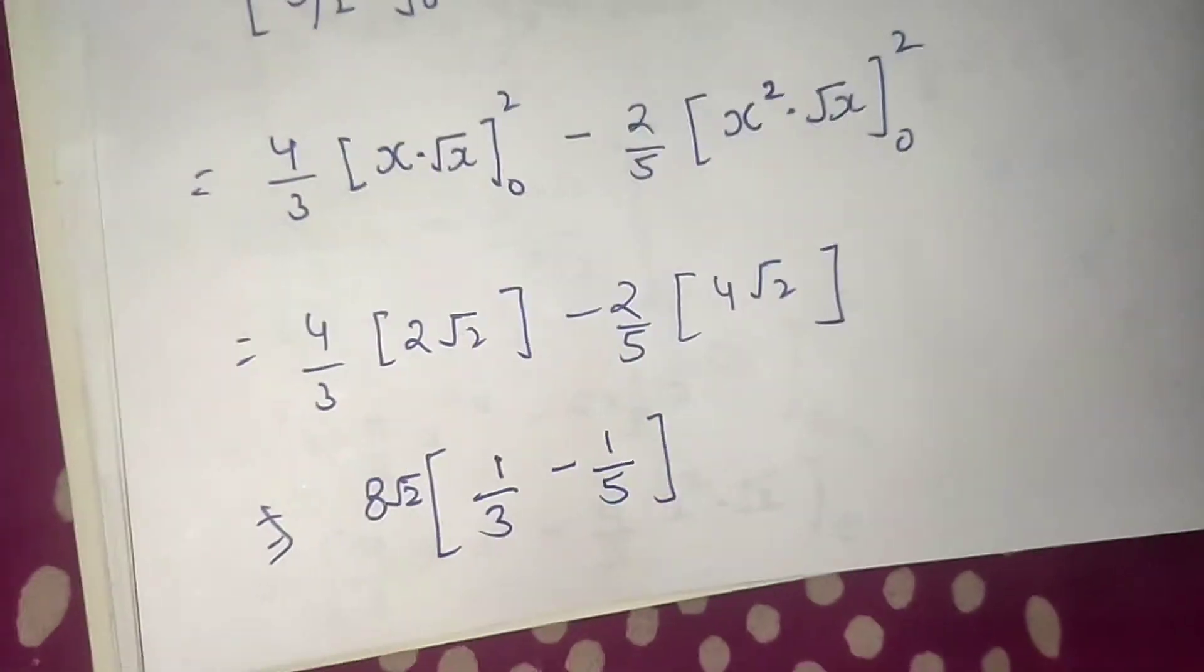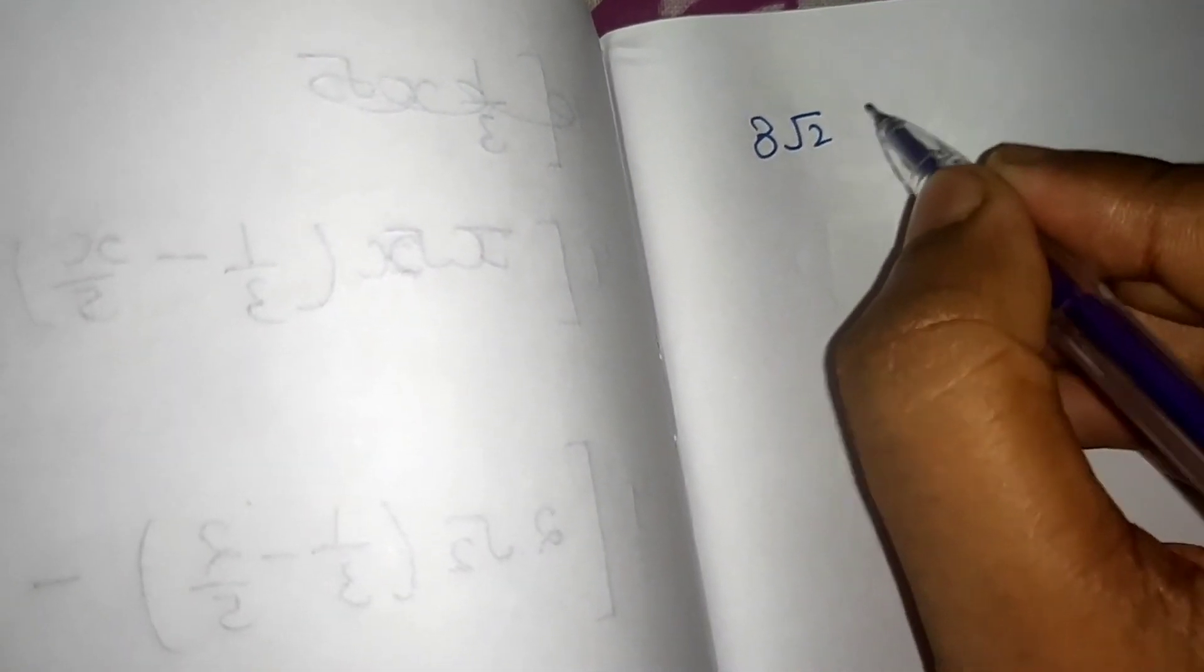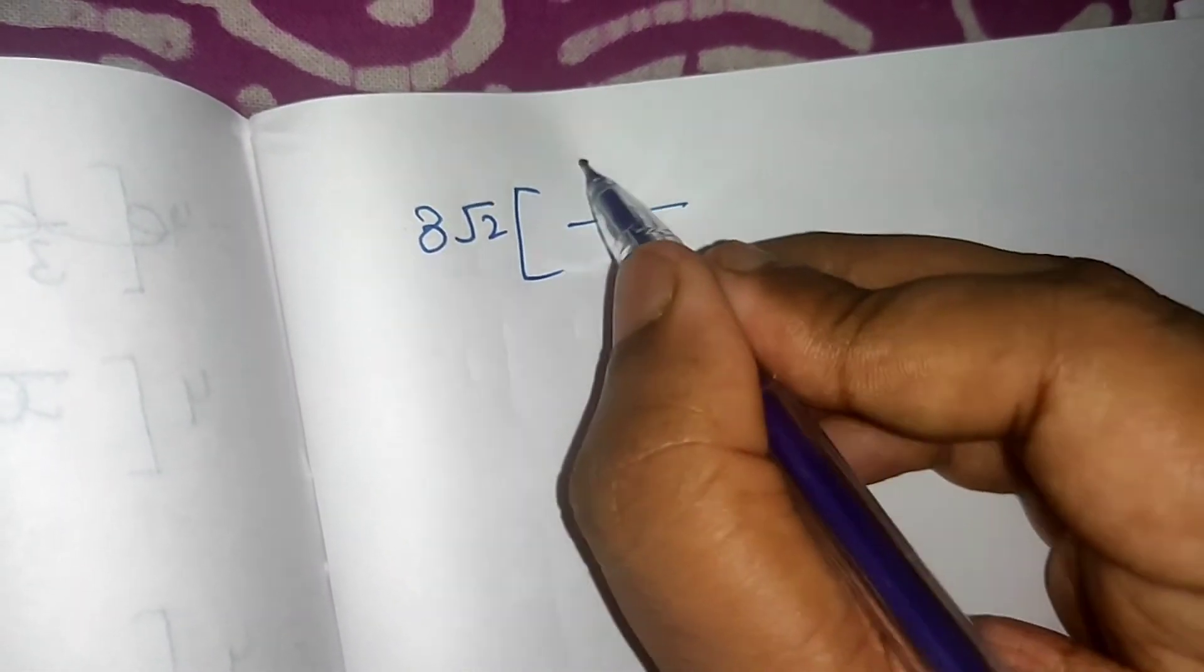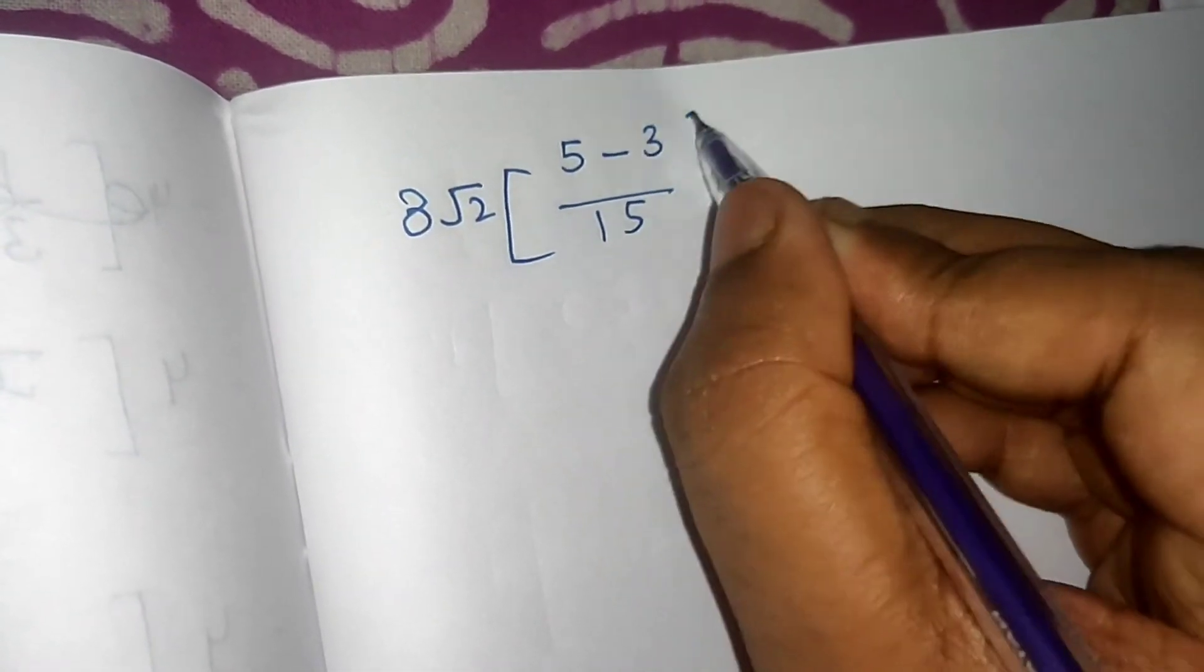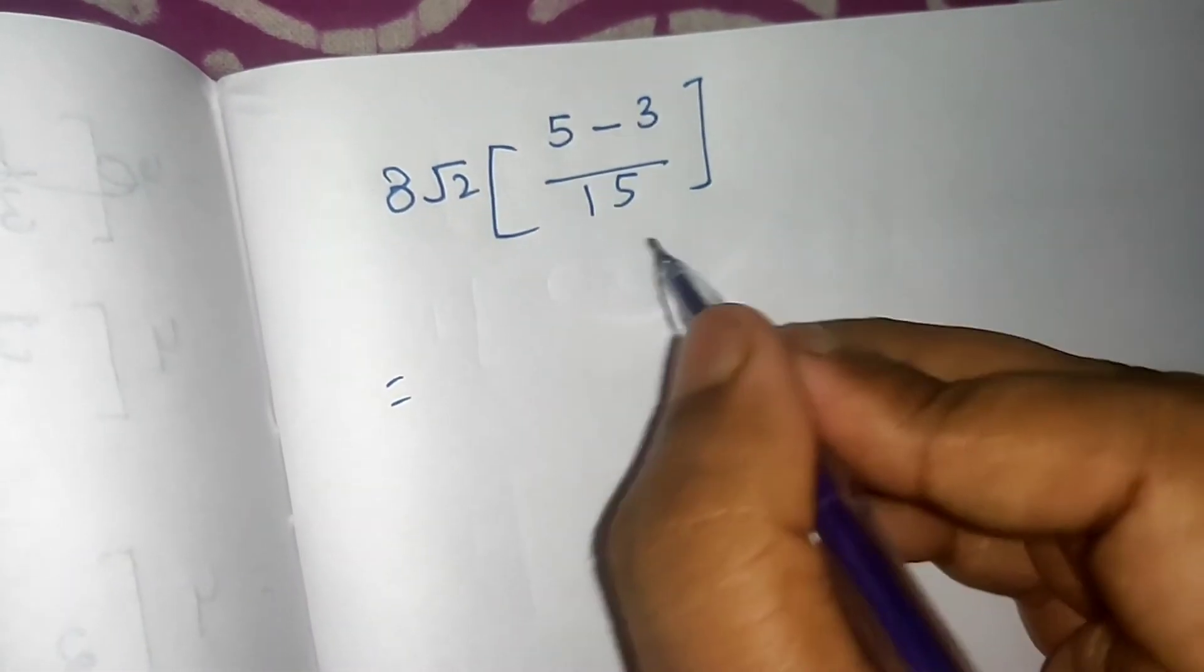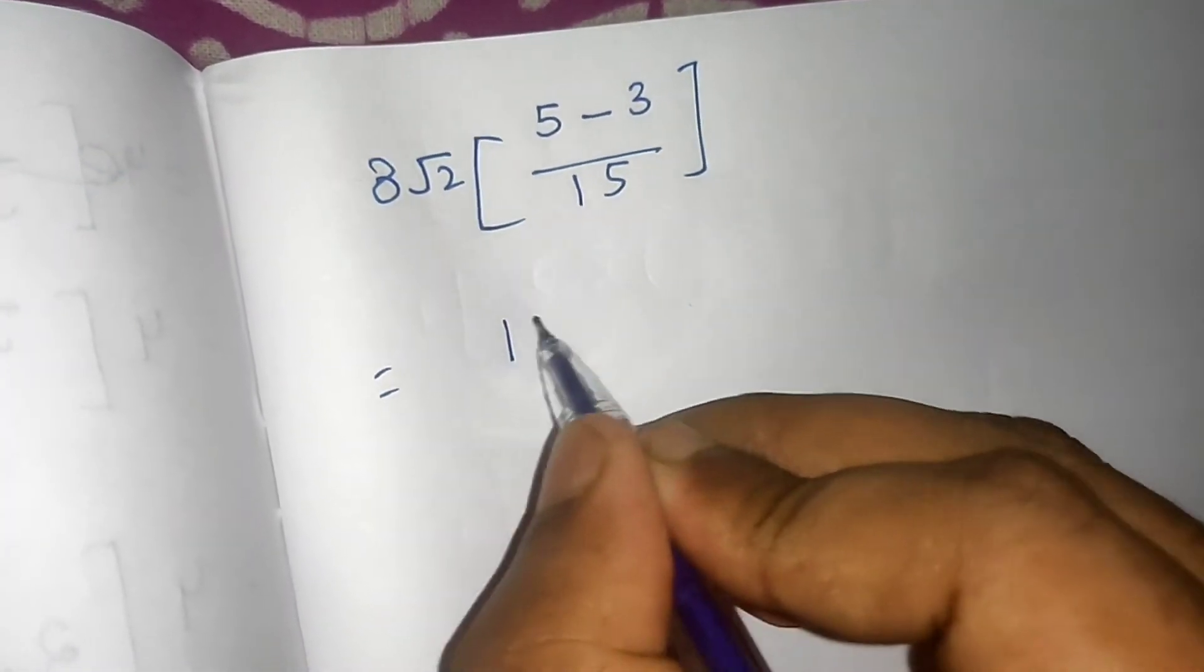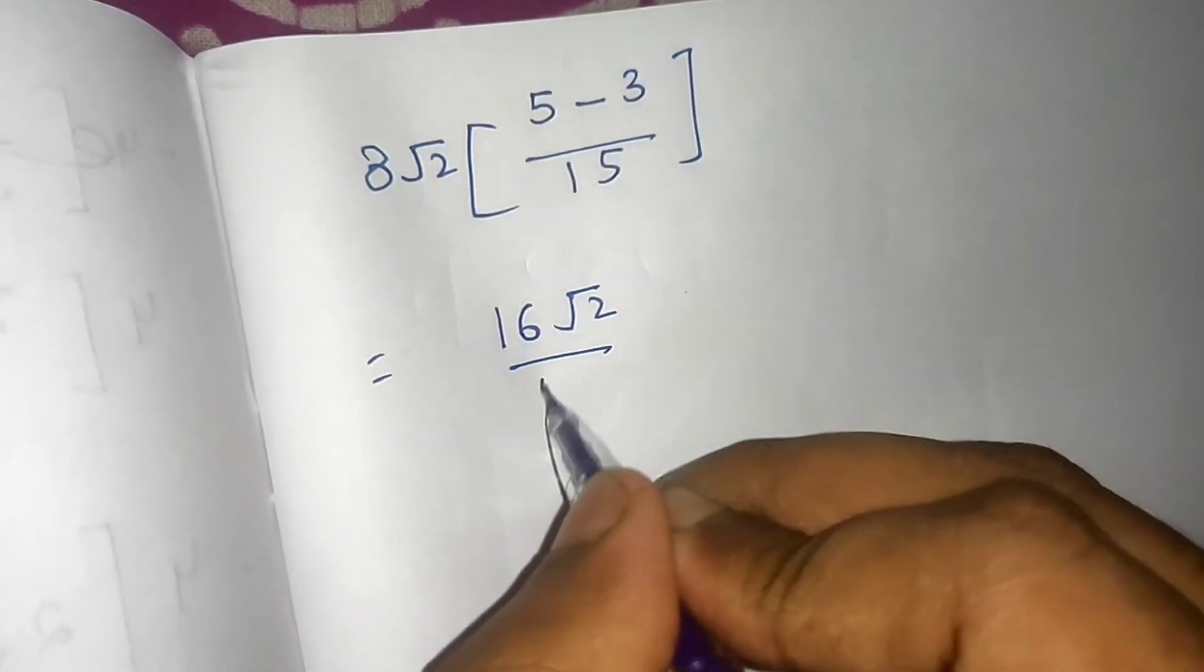Now 8 root 2 is common. Now 1 by 3 minus 1 by 5, so 15 comes as LCM. 3 times 5 is 15 minus 5 times 3 is 15. So 5 minus 3 is 2 by 15. If I multiply 8 root 2 by 2, it is getting 16 root 2 divided by 15. So this is my final answer.